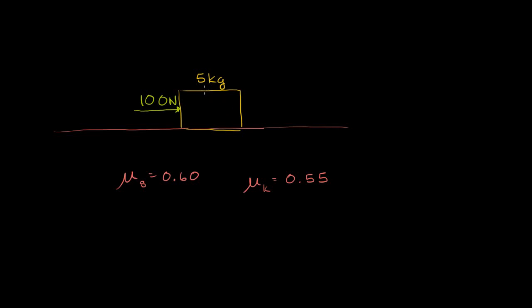I've got a block of wood with a mass of 5 kilograms sitting on some dirt, near the surface of the Earth. The coefficient of static friction between this wood and dirt is 0.60, and the coefficient of kinetic friction is 0.55 — values measured previously or found in a reference. We push on the side of the block with a force of 100 newtons. What is going to happen?